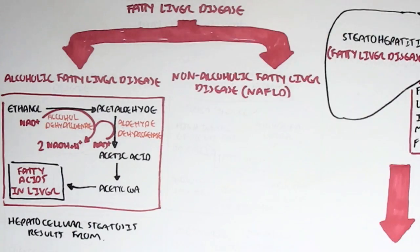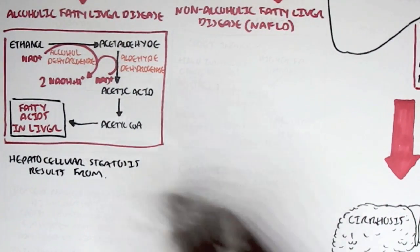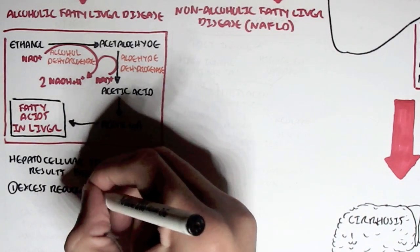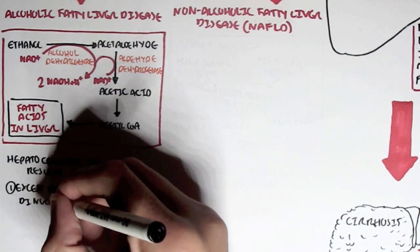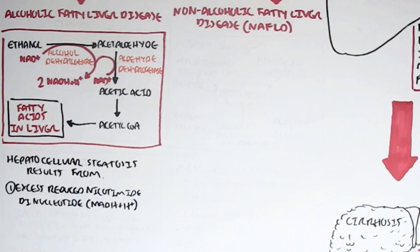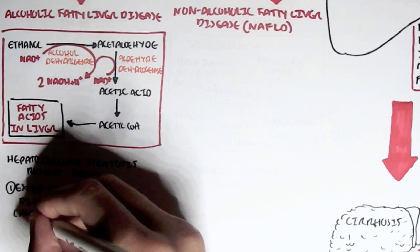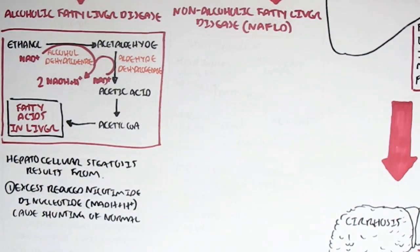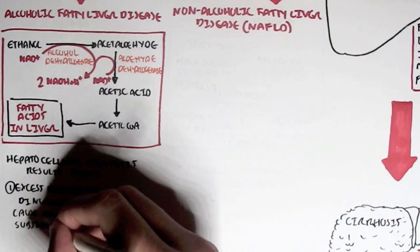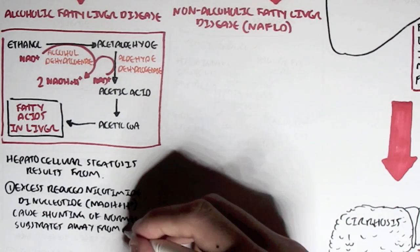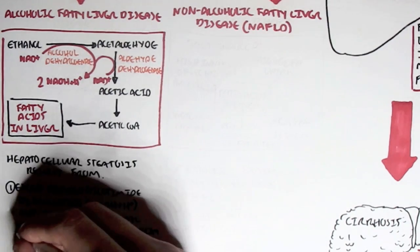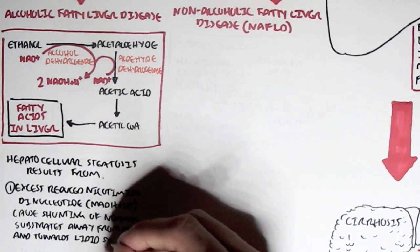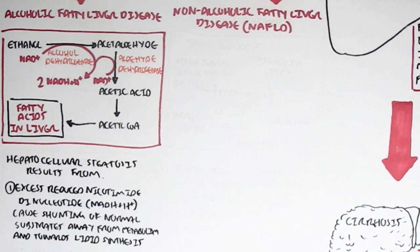For alcoholic fatty liver disease, hepatocellular steatosis results from, one, the excess reduced nicotinamide nucleotide — the NADHs that were formed — which causes shunting of normal substrate away from metabolism and towards lipid synthesis instead. Because if you know biochemistry, if you have a lot of NADHs, you need NADHs to make fatty acids, so with a lot of NADHs, it will tell the body to make a lot of fatty acids.